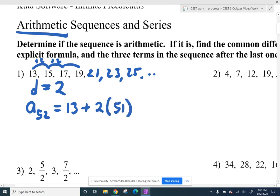Notice, to get the second term we added our common difference once. To get the third term we added our common difference twice. So to get the 52nd term we add our common difference 51 times. And so if we punch that into a calculator, we're going to get that the 52nd term is 115.